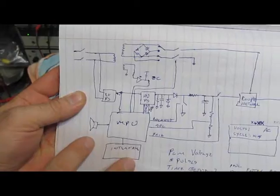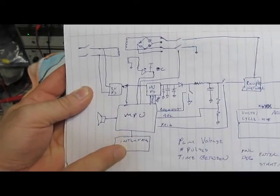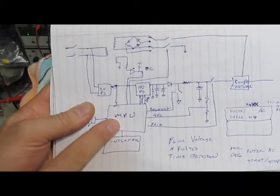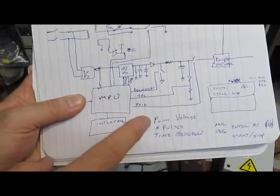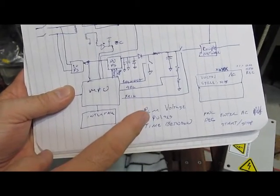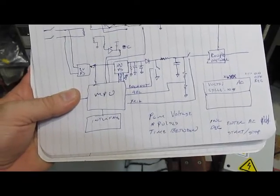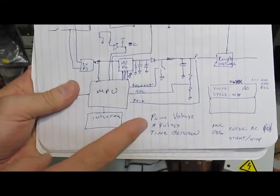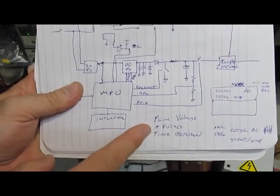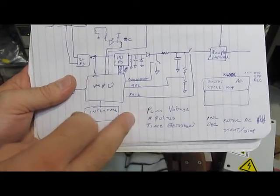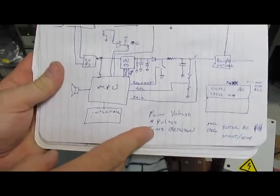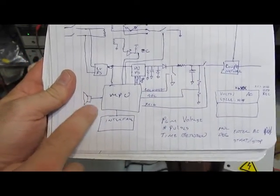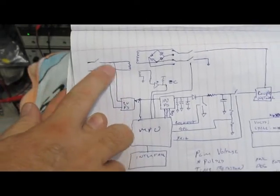The new generator is going to have a microprocessor, an LCD, and a keypad. The microprocessor will allow me to set the peak amplitude and the number of transitions I want to fire. Before, I was manually counting pulses which was quite time-consuming. Now I'll be able to program the generator for a set number of pulses, have it run through them all, and program the time between pulses. There'll be a beeper to tell me when it's completed.